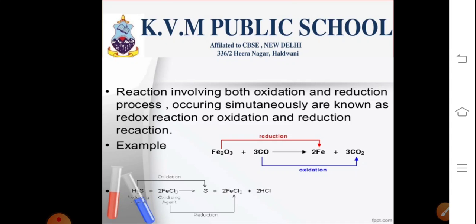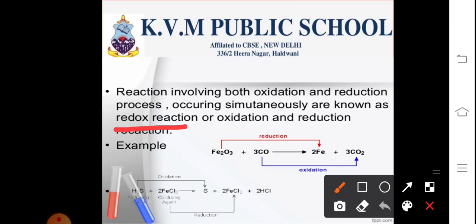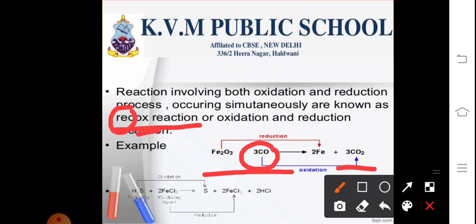Let us talk about reactions which involve both oxidation and reduction. Such reactions are referred to as redox reactions, where 'red' stands for reduction and 'ox' for oxidation. In this equation which is underlined here, Fe₂O₃ is combining with carbon monoxide. The carbon monoxide is undergoing oxidation because there is addition of oxygen to form carbon dioxide, whereas Fe₂O₃ is getting reduced to produce iron.